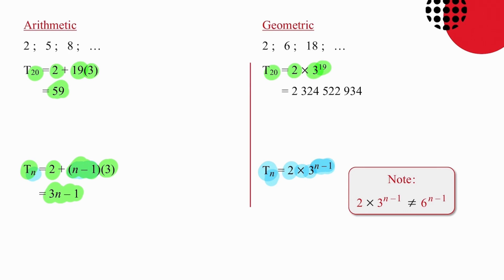It is also very important to note when you are simplifying a geometric sequence that you may not take the common ratio, which is 3, and the first term, which is 2, and multiply them, because only the common ratio is raised to this power of n minus 1. So if you were to multiply the 2 and the 3 to get 6, you would be completely distorting the answer, and it would be regarded as a very serious error.